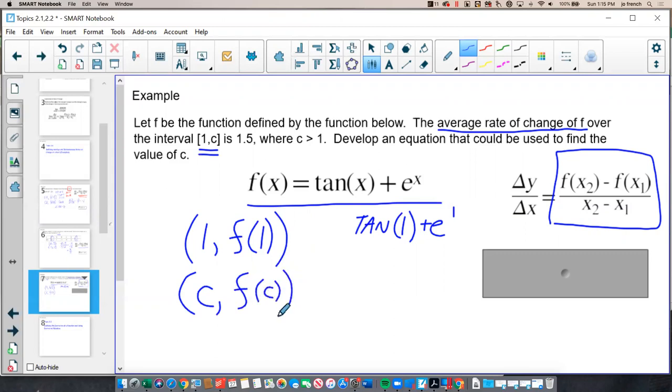And if I use these points in my average rate of change formula, so f of c minus f of 1 over c minus 1, that should give me my average rate of change, which they told me in the question was 1.5.